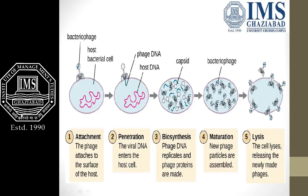In a second diagram, the same steps are shown. First, attachment — the phage attaches to the surface of the host. Then penetration — the viral DNA enters the host cell. Then capsid biosynthesis — phage DNA replicates and phage proteins are made. Then maturation — new phage particles are assembled. And finally, lysis — releasing the newly made phages.